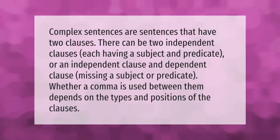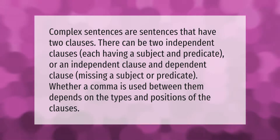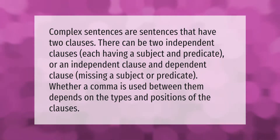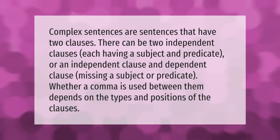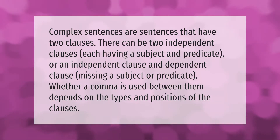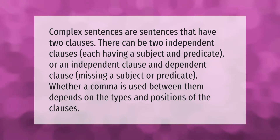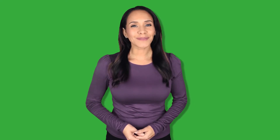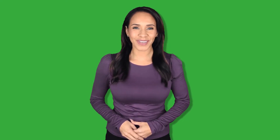Complex sentences are sentences that have two clauses. There can be two independent clauses each having a subject and predicate, or an independent clause and dependent clause missing a subject or predicate. Whether a comma is used between them depends on the types and positions of the clauses. Thank you for watching; please subscribe and hit the bell notification.